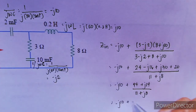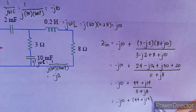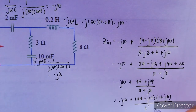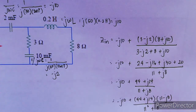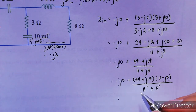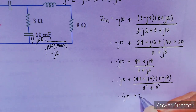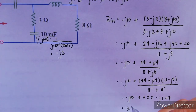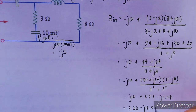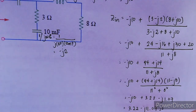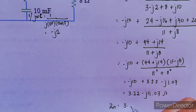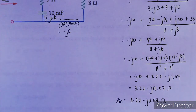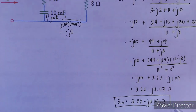Multiplying by the conjugate: (44 + j14)(11 − j8) / (11² + 8²). Using a calculator in complex mode, the parallel combination evaluates to 3.22 − j1.07. Therefore, Z_in = −j10 + 3.22 − j1.07 = 3.22 − j11.07 Ω. That is our input impedance — 3.22 − j11.07 Ω.